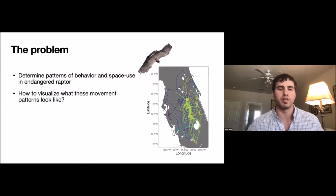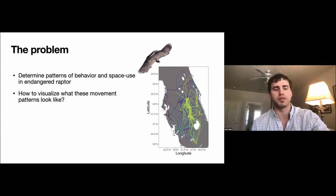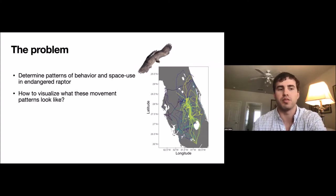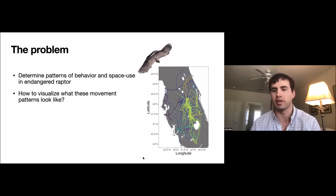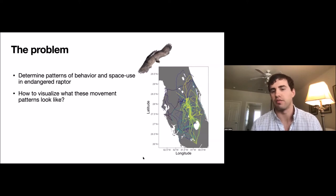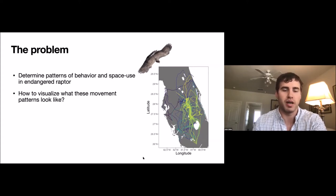The way I ran into this problem when I first started my postdoc at the University of Florida was a collaborative effort with Dennis and another co-advisor, Rob Fletcher. We were trying to determine the behavior and space use patterns of the endangered snail kite found in Florida. I had data from 27 tagged individual snail kites, all mapped for peninsular Florida. Right away, you can see a lot of track density in the middle and along the Kissimmee River corridor between Lake Okeechobee and other smaller lakes in north central Florida.